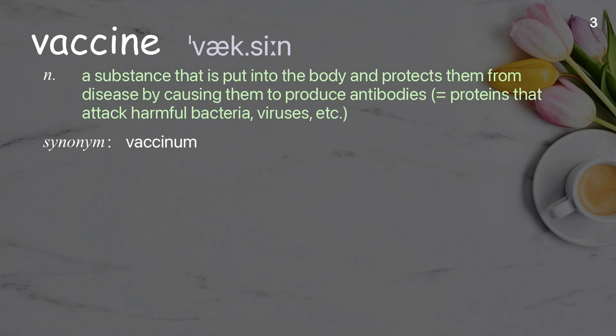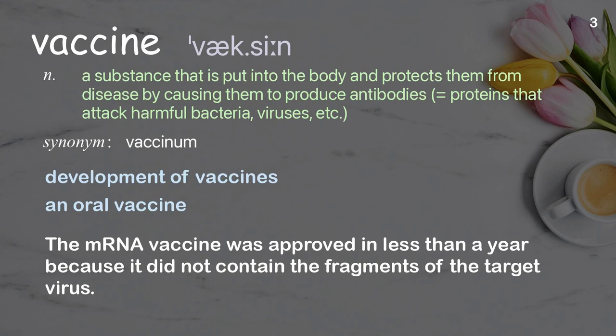Vaccine: a substance that is put into the body and protects them from disease by causing them to produce antibodies — proteins that attack harmful bacteria, viruses, etc. Examples: development of vaccines, an oral vaccine. The mRNA vaccine was approved in less than a year because it did not contain the fragments of the target virus.